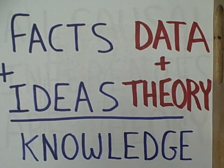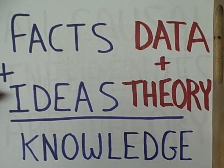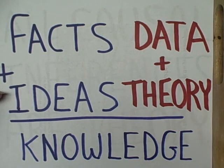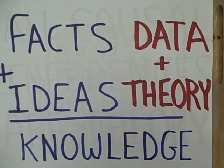Here's the equation. In order to get scientific knowledge, we must have both facts and the ideas that make sense out of those facts. The facts are the data, and those ideas — the abstract concepts — are the theory. Data plus theory equals scientific knowledge.